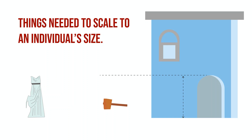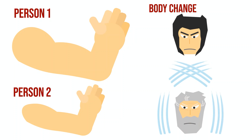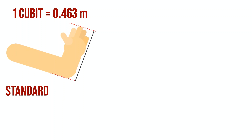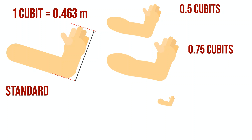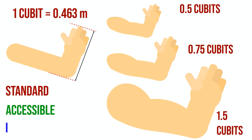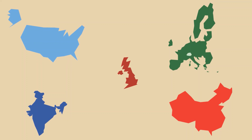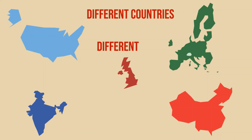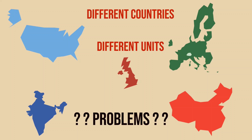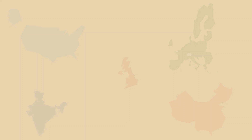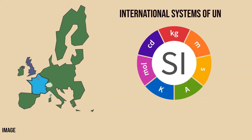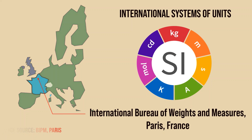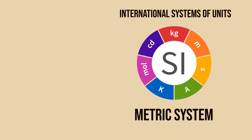The obvious problem of measuring sizes based on body parts is that they vary from person to person, and people's bodies change with time. Therefore, a standard is required to calibrate all measurements which is accessible as well as invariable. Imagine a world where units change with countries, just like currencies do. In the modern world, we avoid such problems by adopting an international system of units, or SI units, also called the metric system.